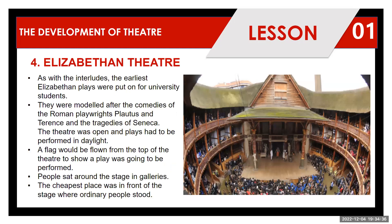In connection with Elizabethan theatre, the earliest Elizabethan plays were put on for university students. They were modeled after the comedies of the Roman playwrights Plautus and Terence, as well as the tragedies of Seneca. The theatre was open, and plays had to be performed in daylight. A flag would be flown from the top of the theatre to show that a play was going to be performed. People sat around the stage in galleries. The cheapest place was in front of the stage where ordinary people stood, while VIPs were accommodated in galleries around the infrastructure.